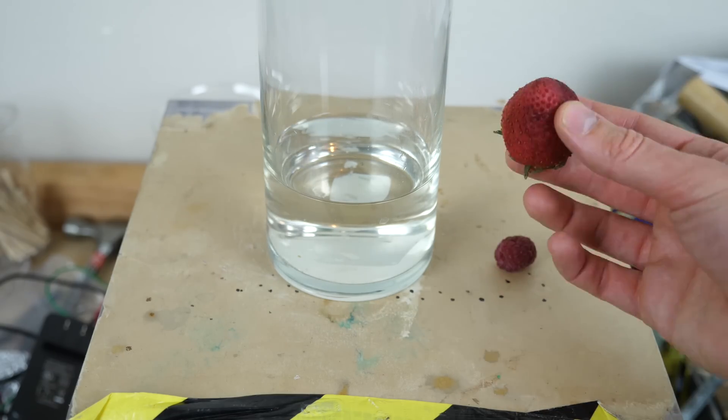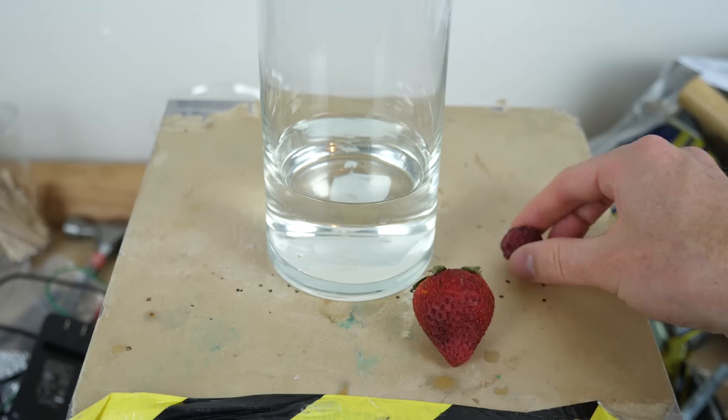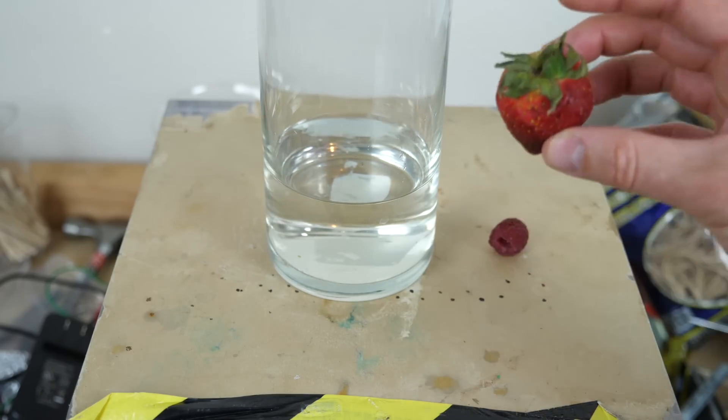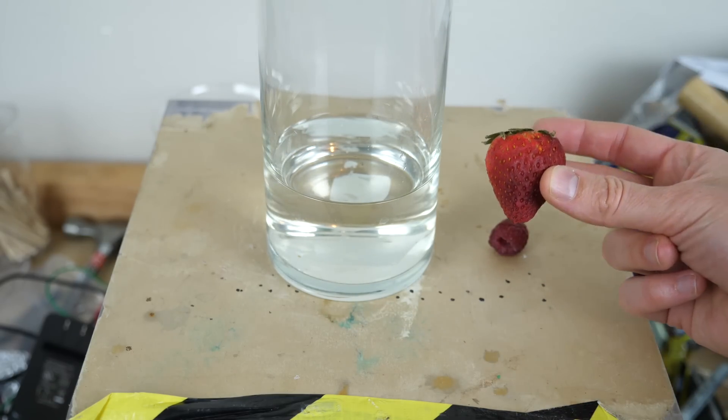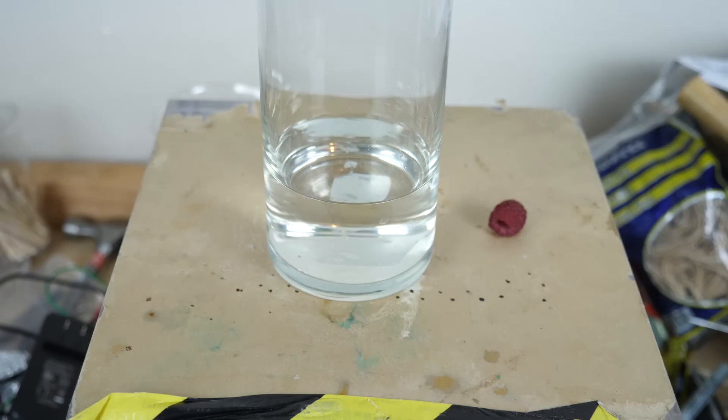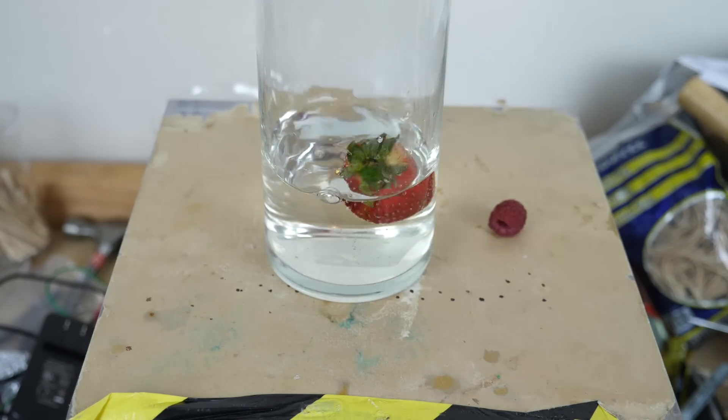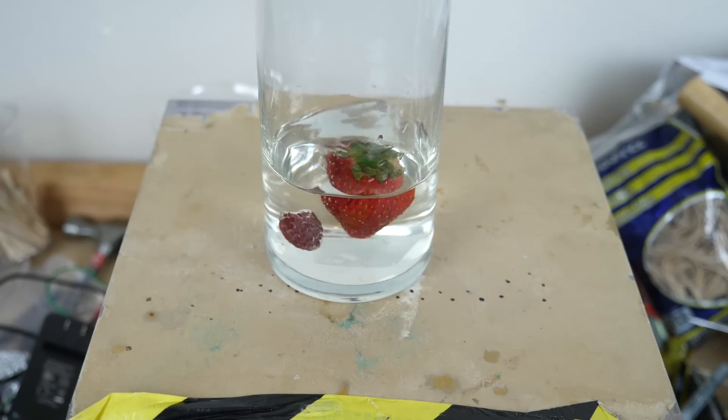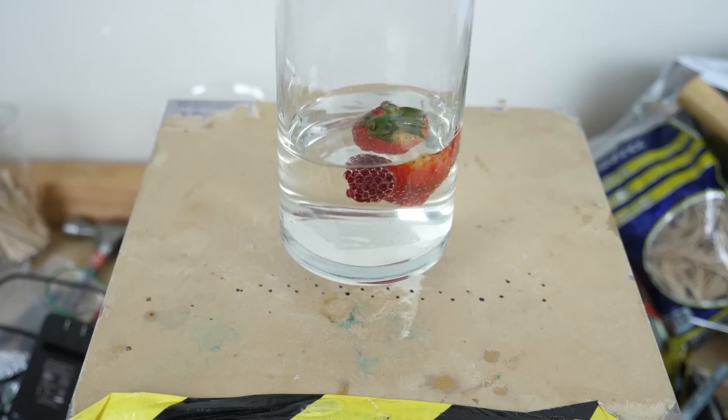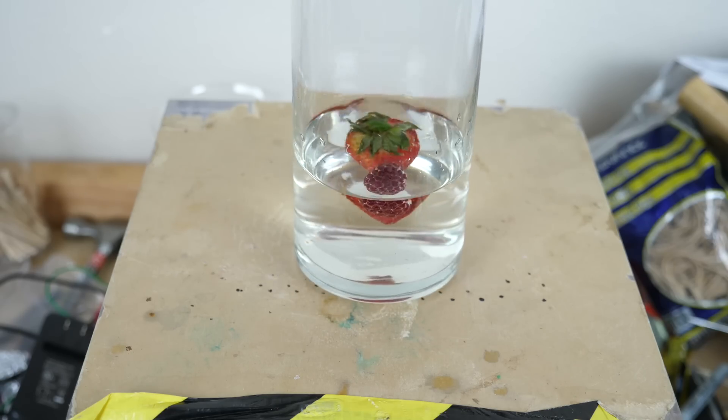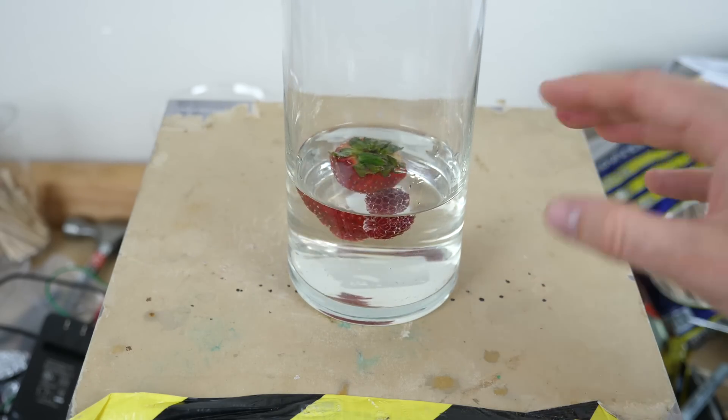Do you think a whole strawberry could turn white just from bleach? Let's check it out. Strawberry. Raspberry. I'm going to let it soak for 24 hours. Let's come back and see what it looks like.